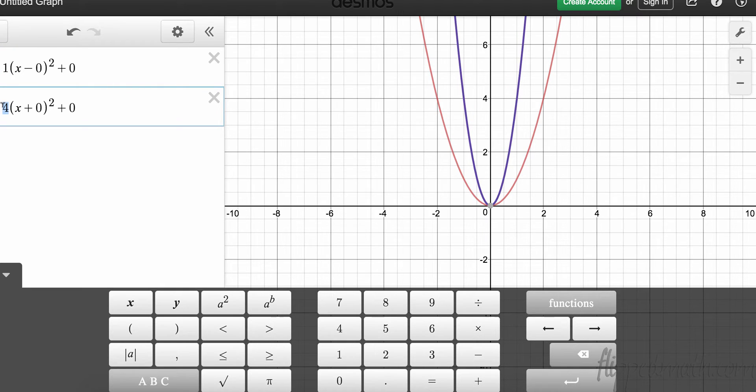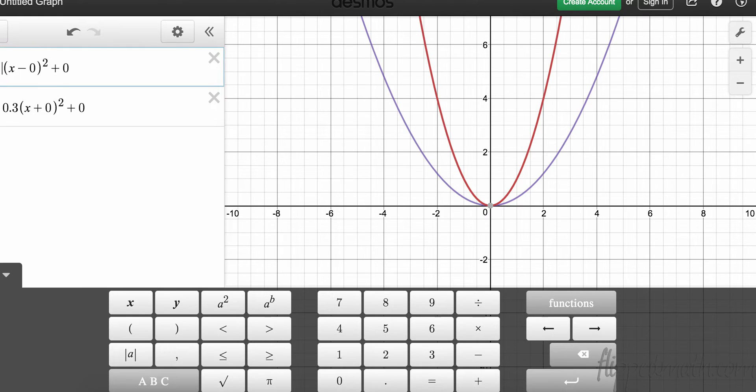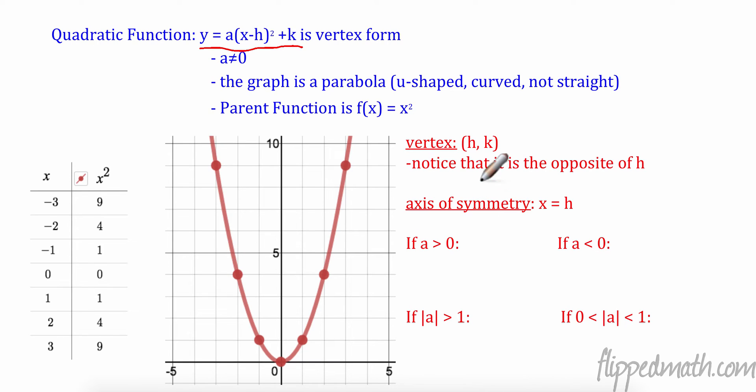All right, let's take that back. What happens if I make it a small number, like a fraction, like 0.3? Oh, when I go under one, it gets wider than our parent function, right? That makes sense. The smaller this number is, the wider it becomes. So if I know that this is 0.3 and I know that this is 0.5, this number is smaller, therefore it will be wider than our other graph. Cool.